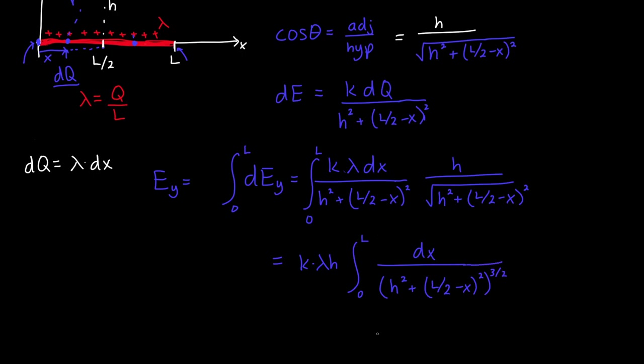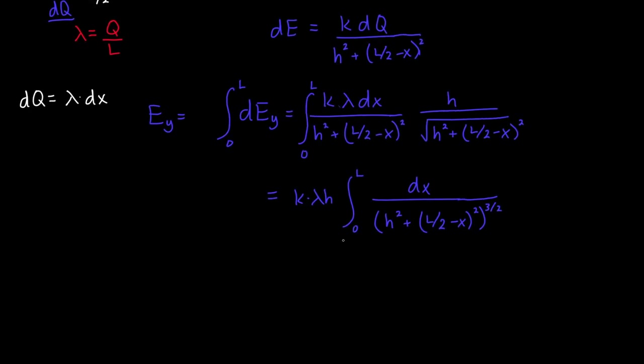So this is the integral that we need to solve. And to actually solve this integral, we can just plug this into our favorite integral calculator. I use Wolfram Alpha. And you can evaluate this integral, and you'll get that this is equal to L over H squared times the square root of H squared plus L over 2 squared. It's kind of gross, but it's an answer. It's a reasonable answer.